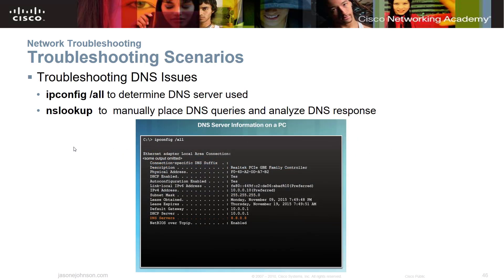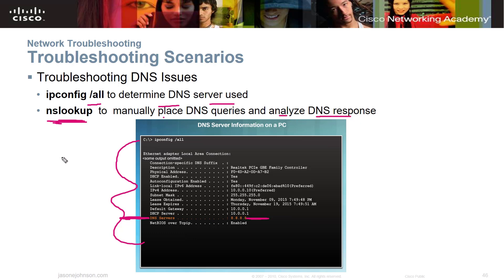When troubleshooting DNS issues, use ipconfig /all to determine your DNS server — you can see your DNS information there and try to ping it to verify reachability. The nslookup command lets you manually place DNS queries and analyze DNS responses. You can also flush your DNS cache if you're having problems with it.